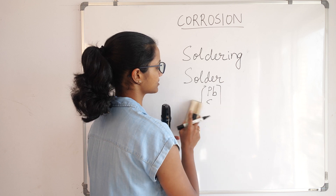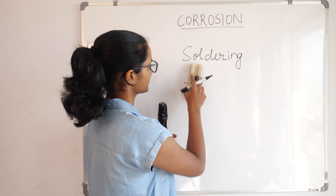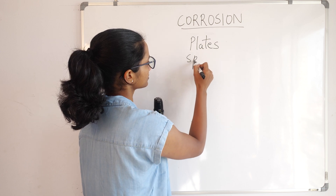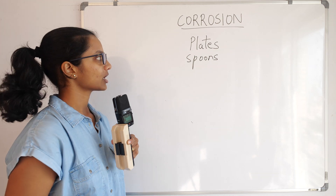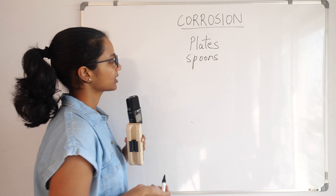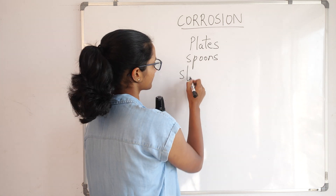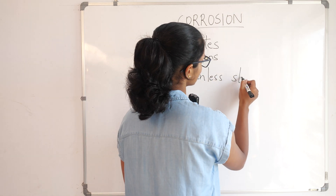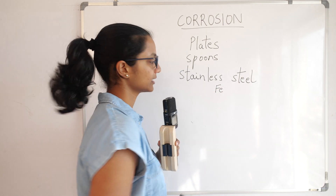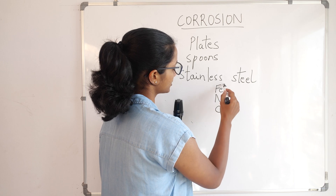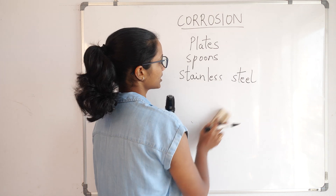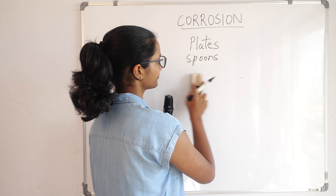Alloys have different properties in comparison with their pure metal components, so there are a lot of benefits of using alloys. Plates, spoons, and vessels used in the kitchen are made out of alloys. Stainless steel is an alloy of iron, nickel, and chromium, with unique properties and benefits.